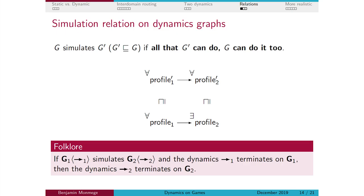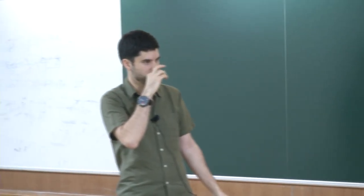A folklore result is useful here: if the graph of dynamics in G1 simulates the graph of dynamics in G2, then if the dynamics terminates on the simulator, you cannot have an infinite path in G2 — otherwise you would also have one in G1. So simulation helps prove termination. And vice versa, it also proves non-termination: if the smaller graph is non-terminating, the larger one is also non-terminating. So it's two tools: one for termination and one for non-termination.